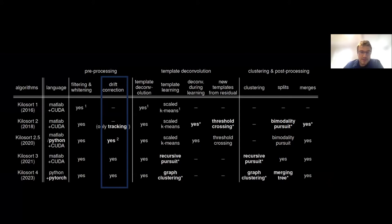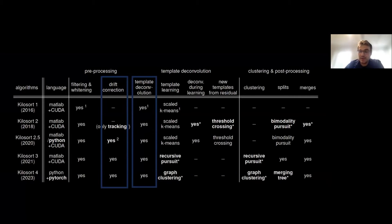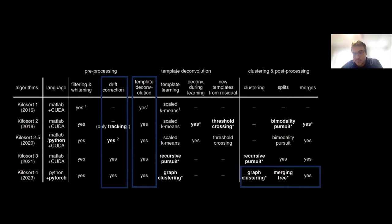So we'll see why that is. After that, I'm going to talk about template deconvolution — essentially how we find spikes, and especially overlapping spikes that might have what's known as spike collisions between them. And then finally, we'll talk a little bit about the new fancy clustering algorithms we've introduced recently.